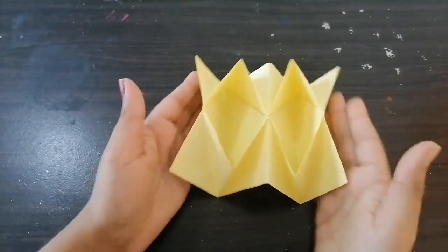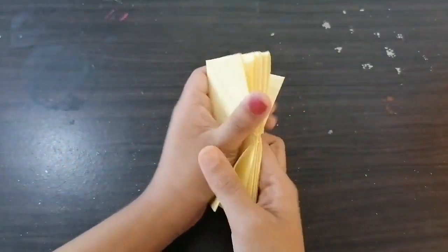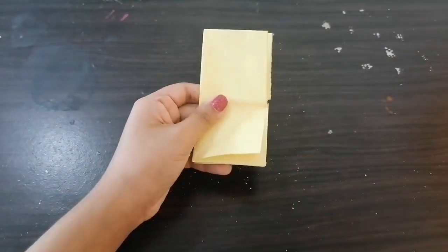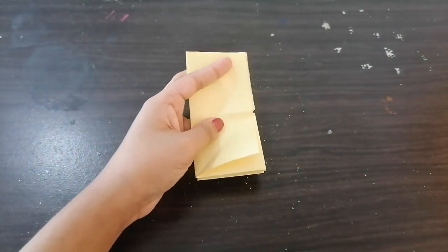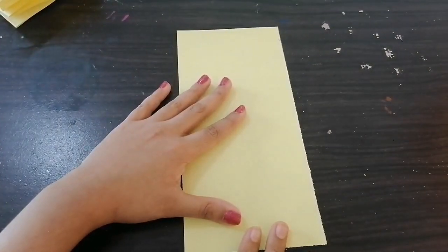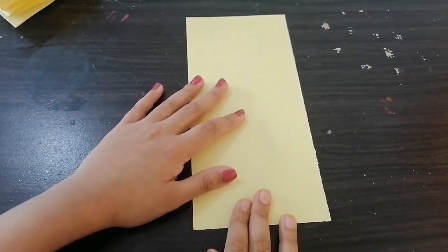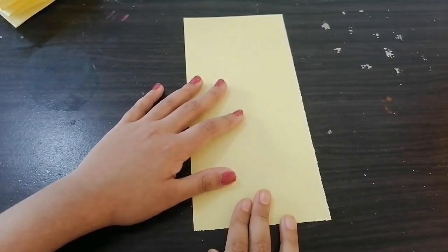Now look how pretty it is. You can see it forms a diamond shape. This is where we are going to keep our money. Now let's make the outer part. Let's keep this aside.